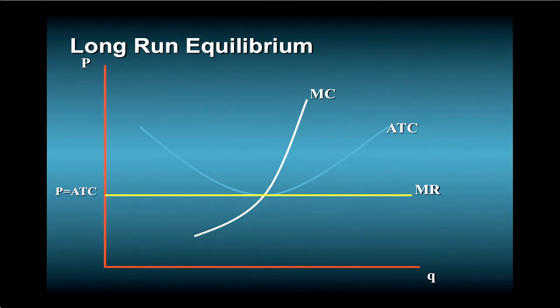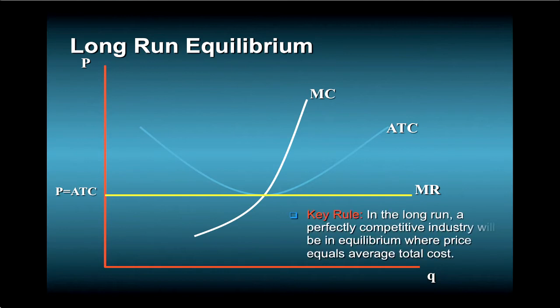While a firm can lose money in the short run, no firm can keep doing it forever. So what does the competitive equilibrium look like in the long run? Take a look at this figure. It illustrates that in the long run, a perfectly competitive industry will be in equilibrium where price equals average total cost.